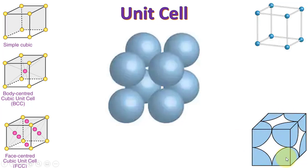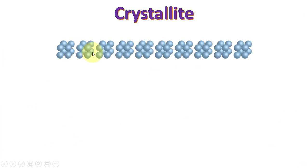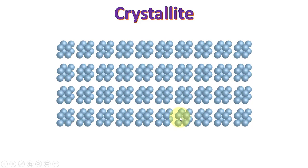Different representations show that any atom is shared with its neighbors, and depending on the structure, the number of atoms in a unit cell can be determined for simple cubic, body centered cubic, and face centered cubic. When these unit cells are arranged in a specific manner, we call it a crystallite.